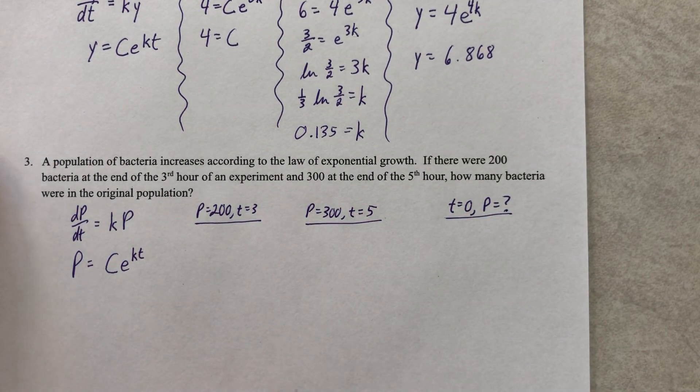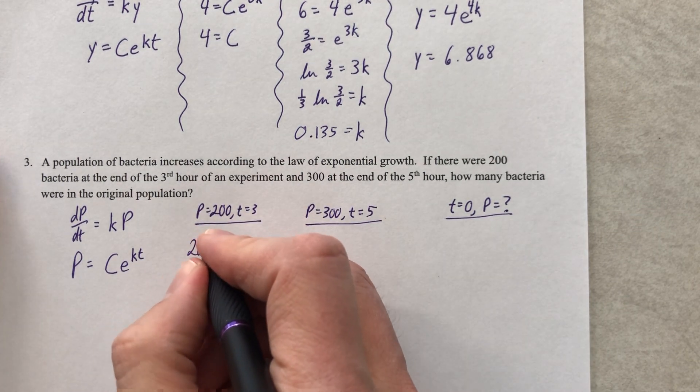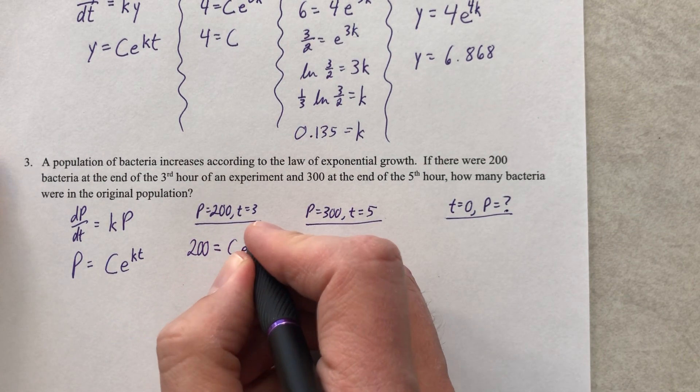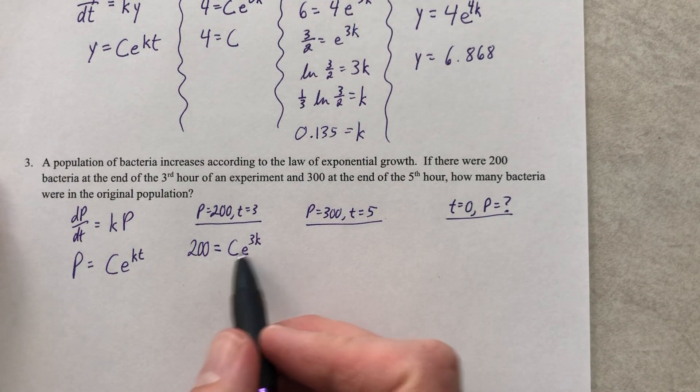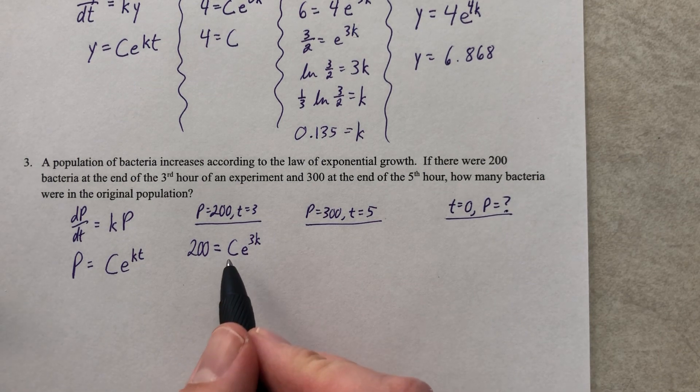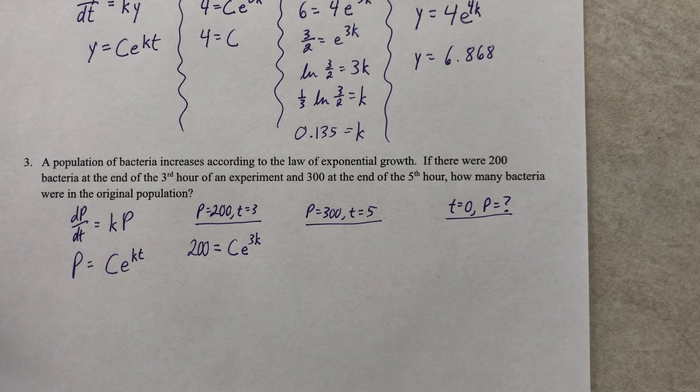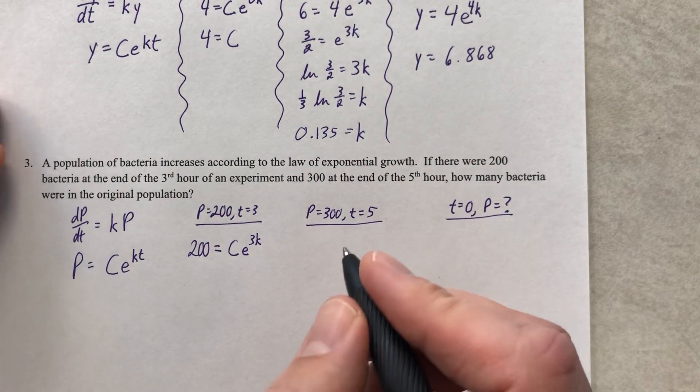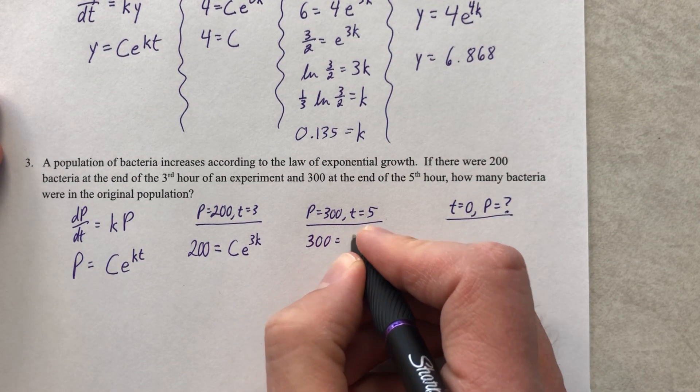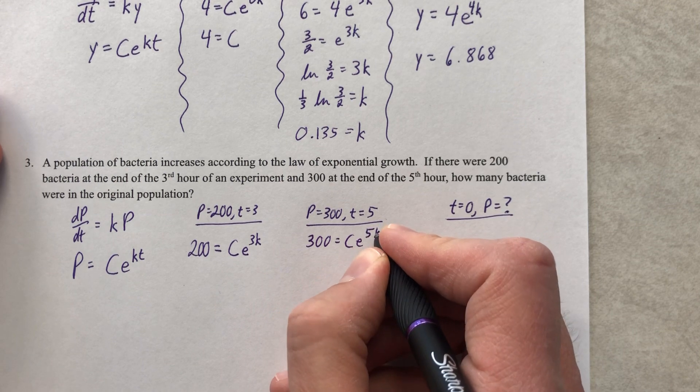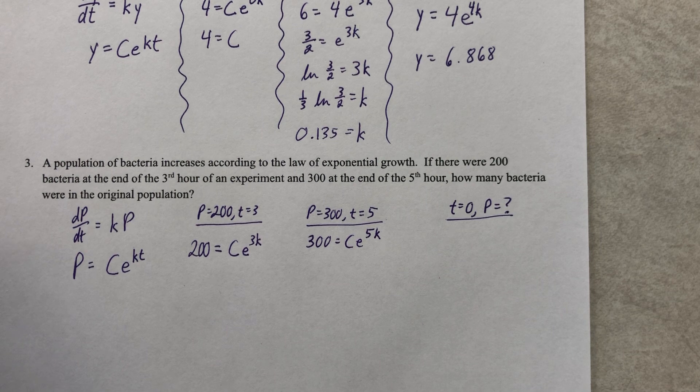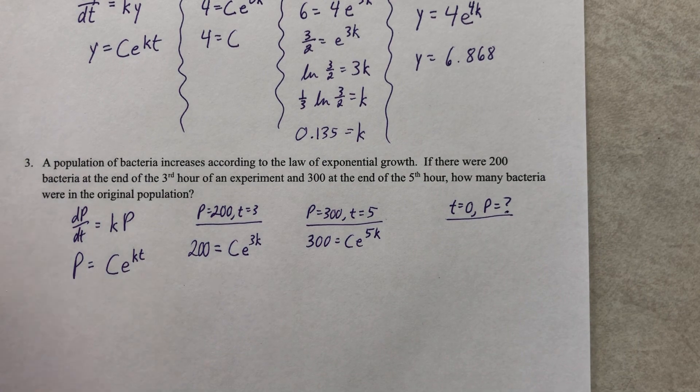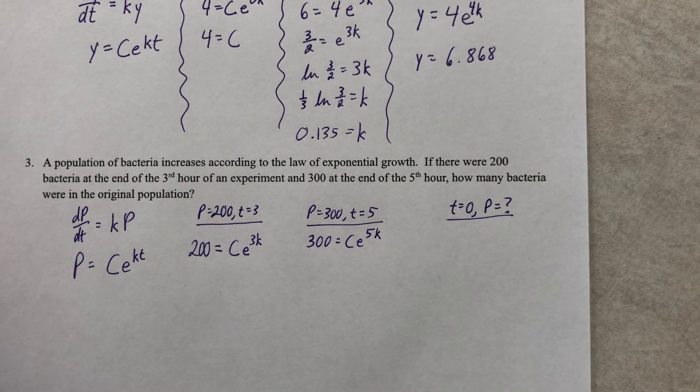Let's use some information they gave me to get that. So the population was 200 when the time was three. And conveniently, we have just lovely numbers that are divisible by 100. The population was 300 when the time was five. So 200 equals Ce to the 3k. And then you're thinking, what am I going to do? How do I solve? You have two variables. So you can't do anything, right? Let's just skip it. Same idea. 300 equals Ce to the 5k. What are you going to do with it? I don't know.